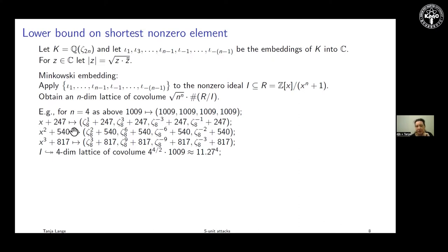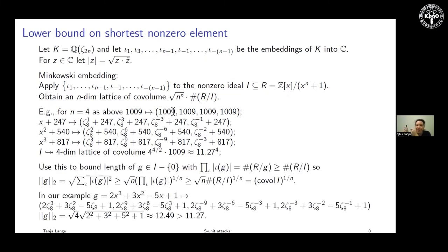This one polynomial turns into four entries. If I take x and map it to zeta_8^{-3}, then x^2 goes to zeta_8^{-6} and the constant stays constant. So I have a four-dimensional lattice. I can compute the co-volume of this lattice, which depends on the dimension and on a large constant — it's 11.27 to the fourth — giving a lower bound on how short a vector can possibly be.